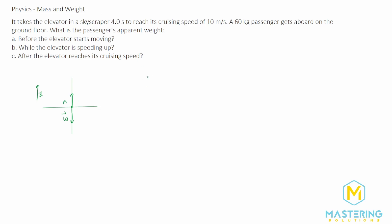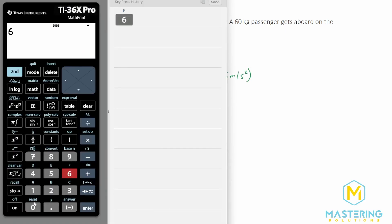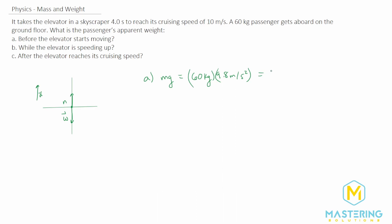For part A, before the elevator starts moving, the apparent weight is just the weight. So it's mass times gravity. We have 60 kilograms times 9.8 meters per second squared, and 60 times 9.8 gives us 588. We could round that to 590. So 590 newtons is the apparent weight for the person before the elevator starts moving, and that's just their normal weight.